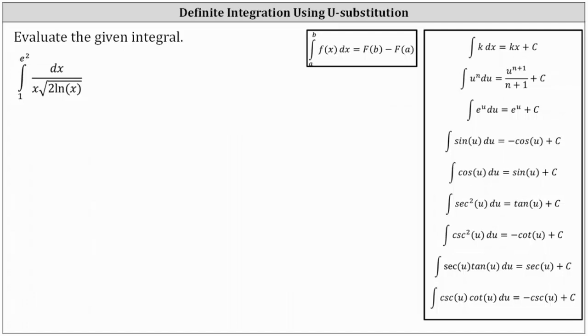In this example, we will evaluate a definite integral using the method of u-substitution. Looking at the integrand function, let's first write the square root using the rational exponent of 1 half.